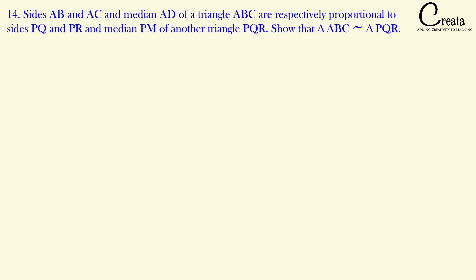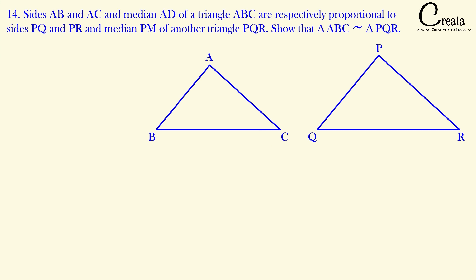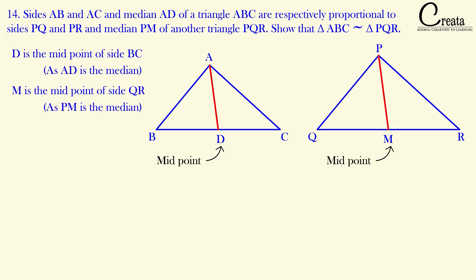Let's move to question number 14. Sides AB and AC and median AD of triangle ABC are respectively proportional to sides PQ and PR and median PM of another triangle PQR. Show that triangle ABC is similar to triangle PQR. This question is somewhat similar to question number 12, but the approach and answer are totally different. In this question we are given two triangles: triangle ABC and triangle PQR, with medians AD and PM. Points D and M are the midpoints of sides BC and QR respectively.